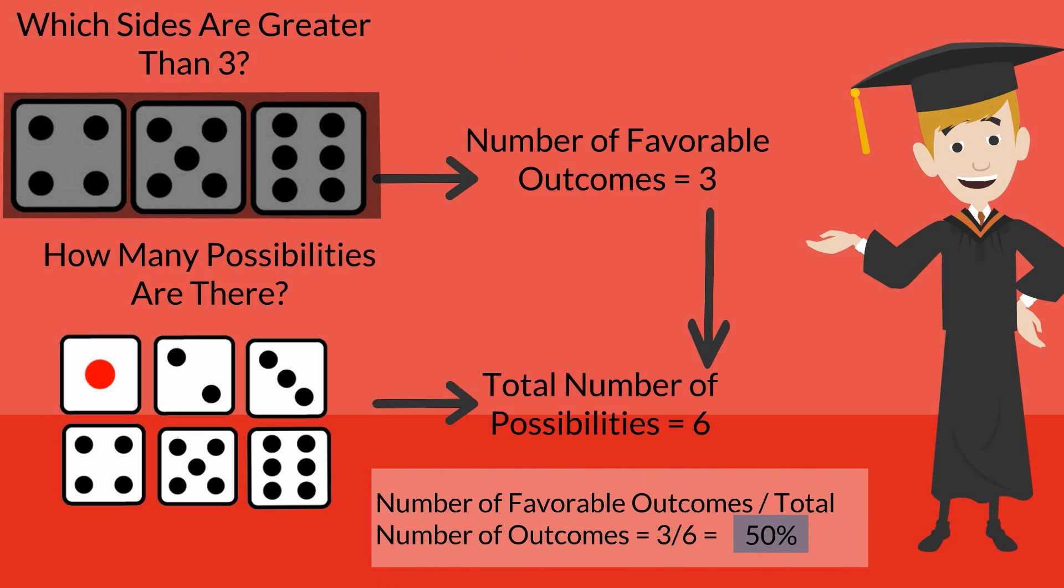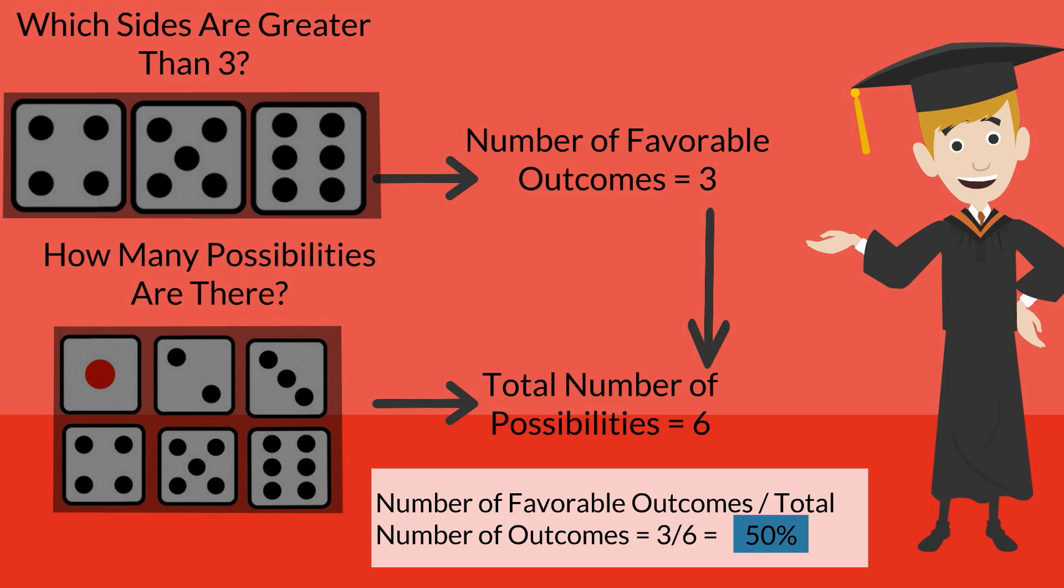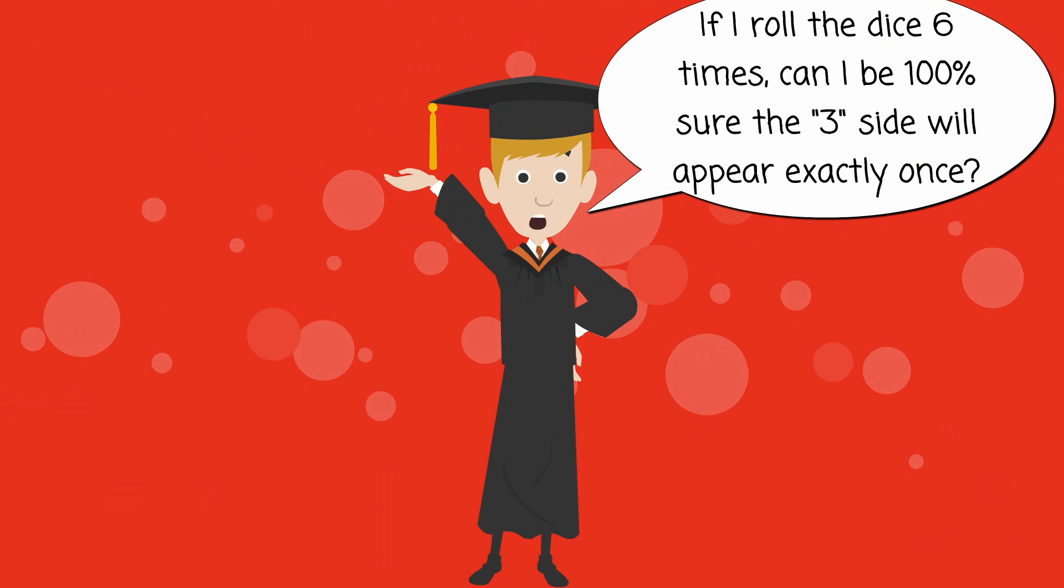As such, we've determined that the likelihood of rolling the dice and getting a number greater than three is three divided by six, or 50%. But please always remember that we shouldn't confuse probability with certainty.